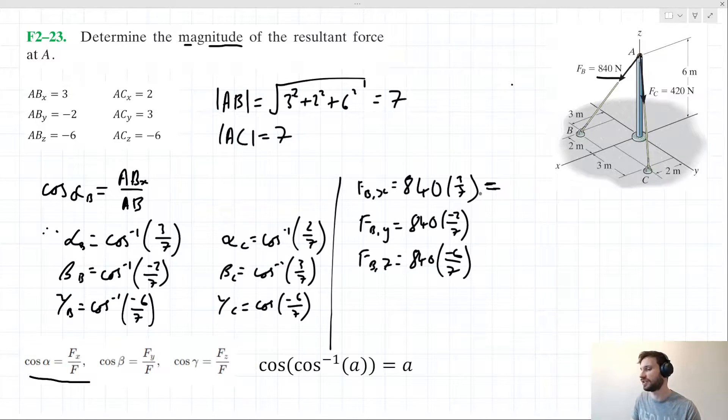Let's calculate these numerically. 840 times 3/7 equals 360. 840 times -2/7 equals -240. And 840 times -6/7 equals -720.